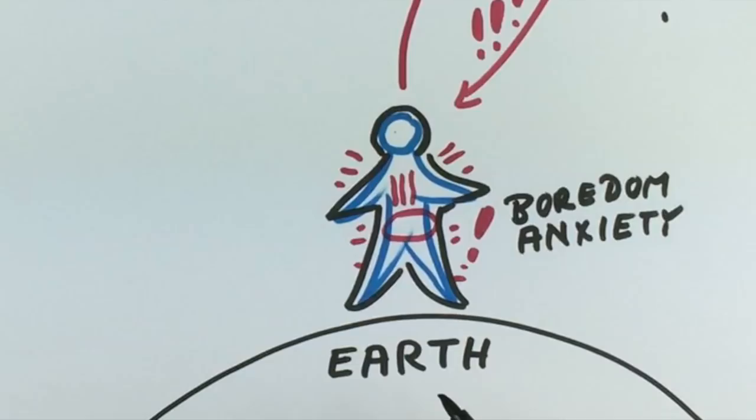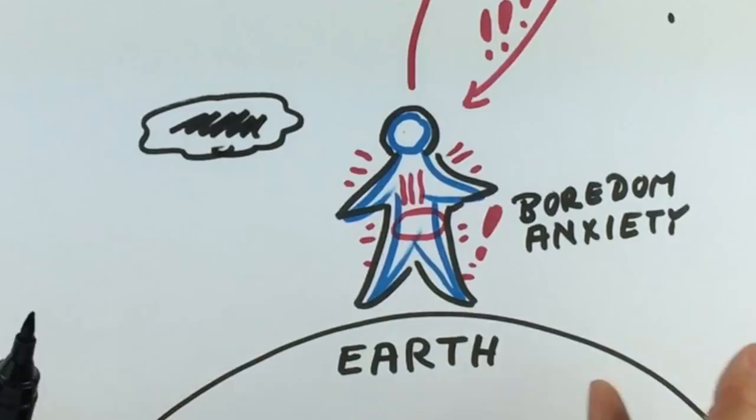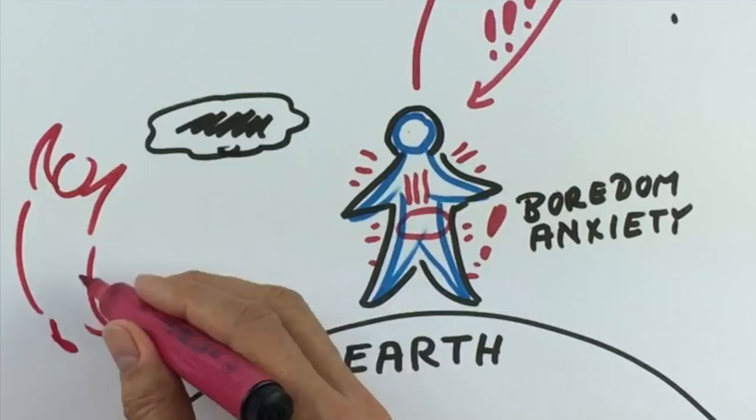Furthermore, the lowering of our vibration can be a portal or an invitation for negative energies. They can then inject us with Trojan thoughts of similar vibration. These are thoughts that we think are ours, but they are not. With these Trojan thoughts they can then manipulate us for their own dark purposes.